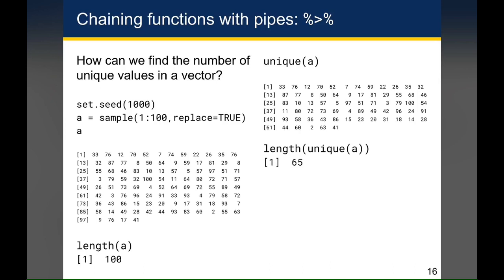I can see just from the brackets on the left that there are 65 items. But if I wanted to calculate that with code, I could use the length function on top of the unique function, on top of the A vector, to get back the value 65, which tells me there's 65 unique values in the vector A.